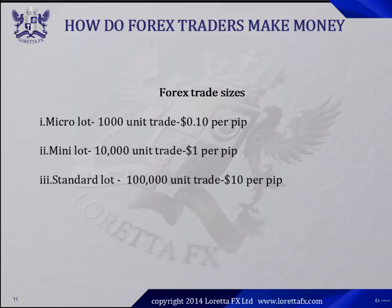Forex trade sizes: we have a micro lot, which is a 1,000 unit trade representing $0.10 per pip. We also have a mini lot, which is a 10,000 unit trade representing $1 per pip. We also have a standard lot, which is a 100,000 unit trade representing $10 per pip.